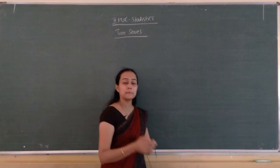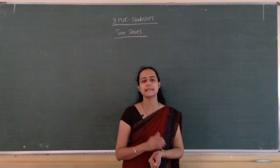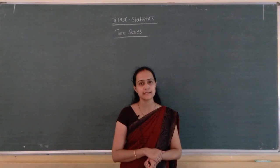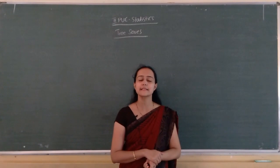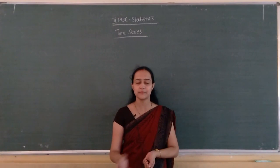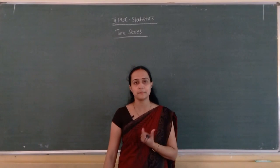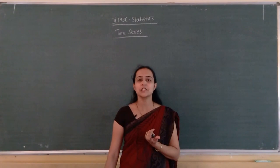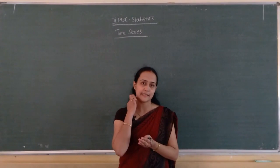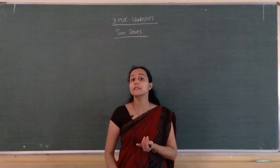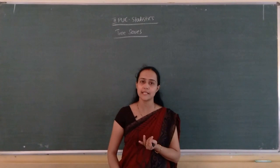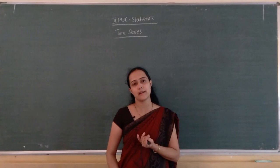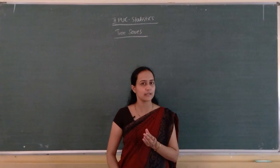Namaste dear students. In the last few classes we were discussing about time series. Time series is a series of observations in which one variable is always time. We saw the components of time series like secular trend, seasonal variation, cyclical variation, and irregular variation. In yesterday's class we saw the methods to measure trend. There are four measures: graphical method, semi-average method, moving averages method, and least squares method. Among these, least squares method is considered the best method for forecasting purpose and it is also a mathematical method.